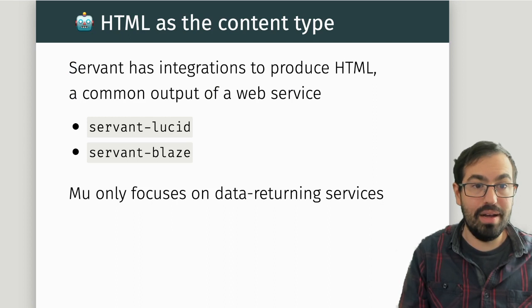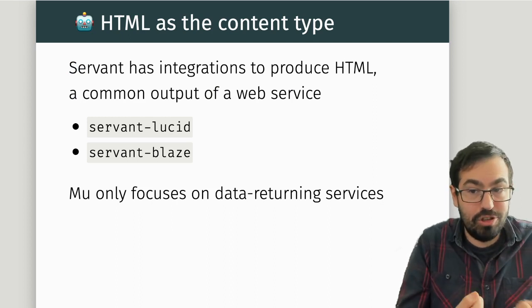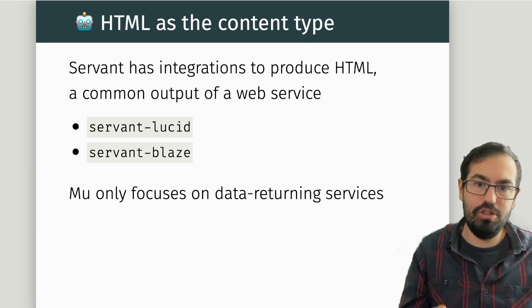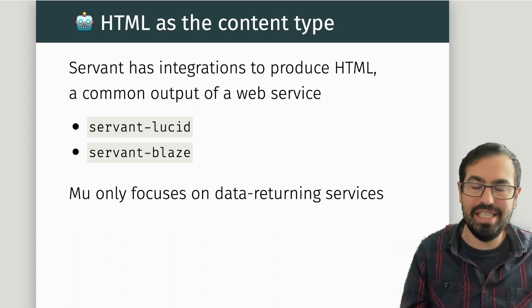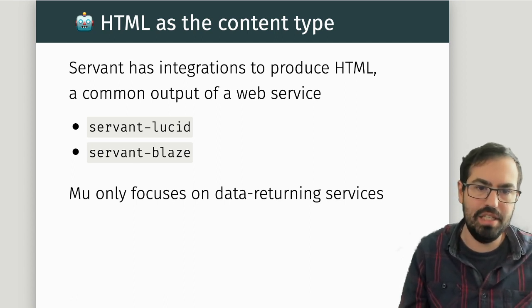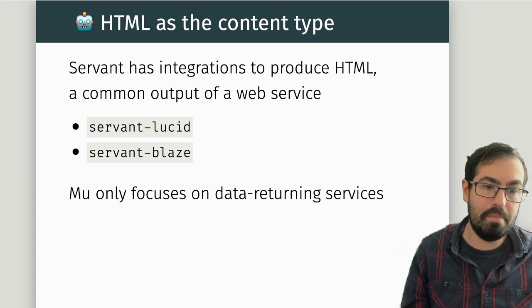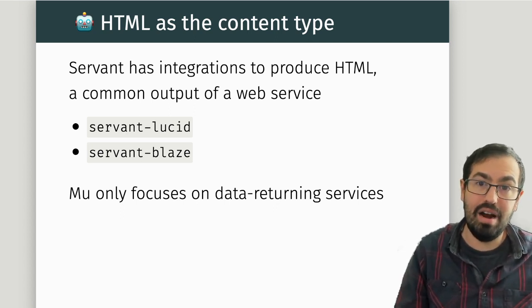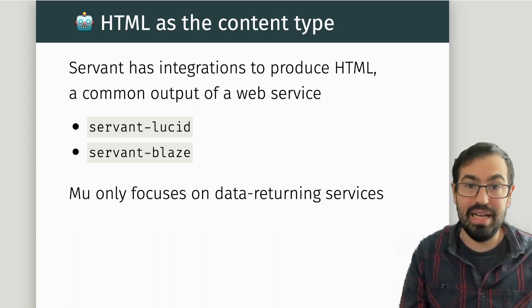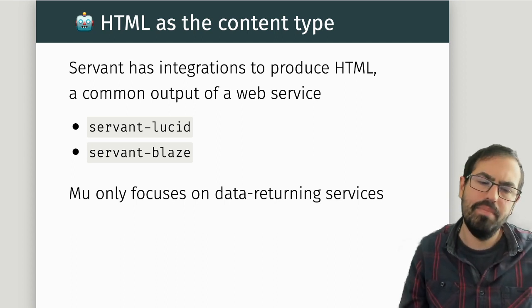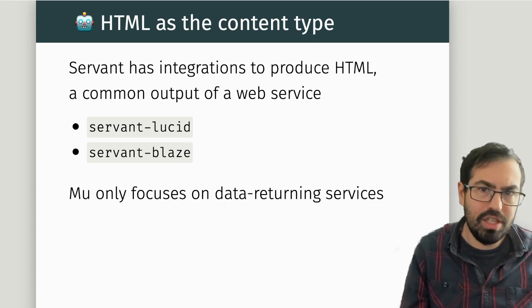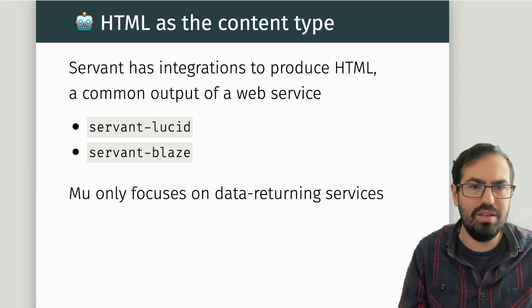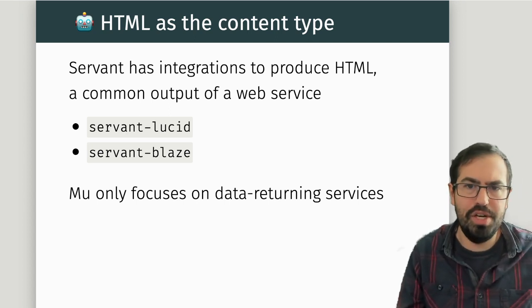Something worth mentioning about Servant is that because it focuses on HTTP services, it has top-notch integration to produce HTML — a common output. You have packages like servant-lucid and servant-blaze, integrating with two of the main HTML libraries in the Haskell ecosystem. Mu, on the other hand, only focuses on data-returning services, so if you want to define something more akin to a front-end service, Mu is not really your choice.